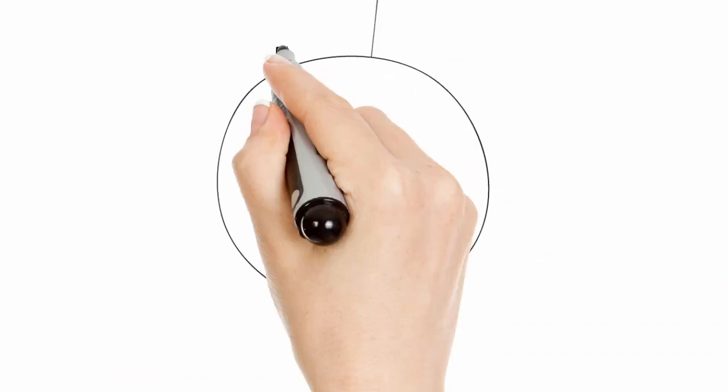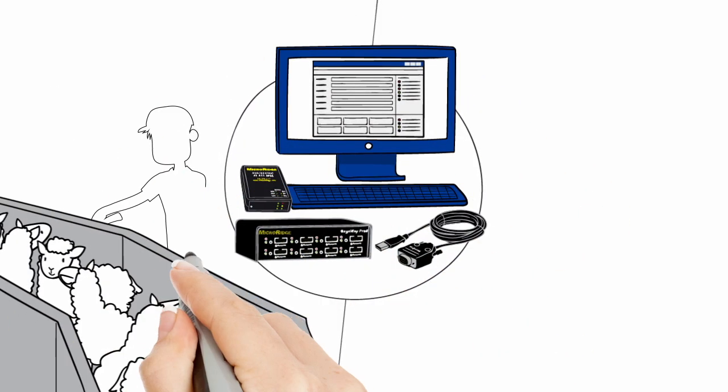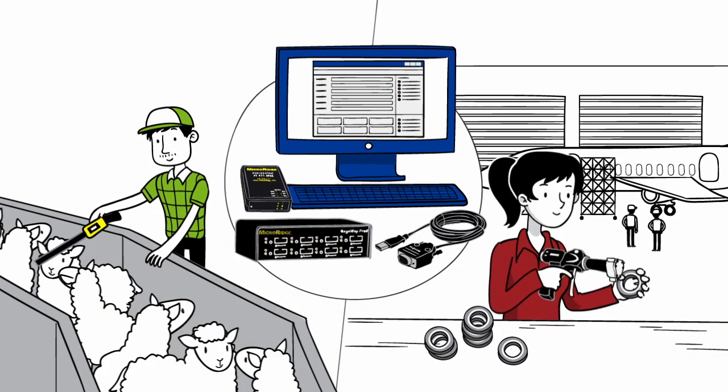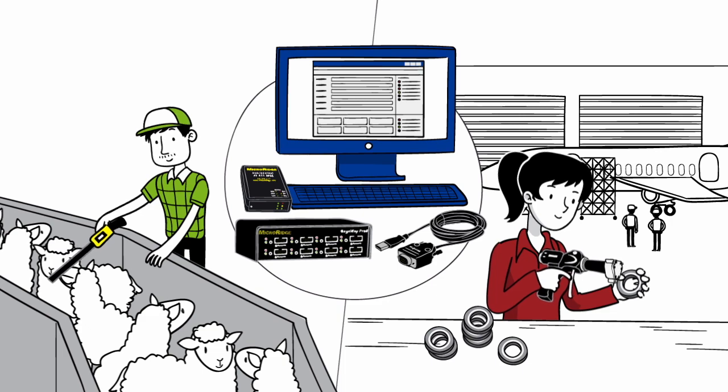Each MicroRidge product can be used individually or in combination to address any measurement collection situation, from livestock tracking to aerospace manufacturing.